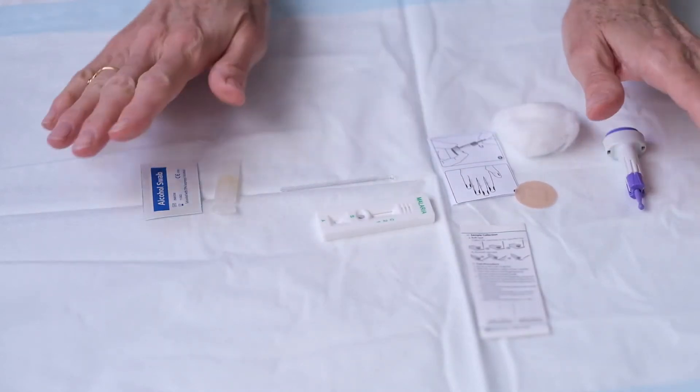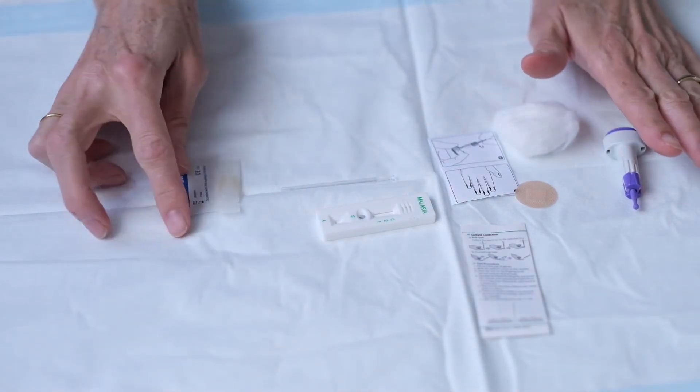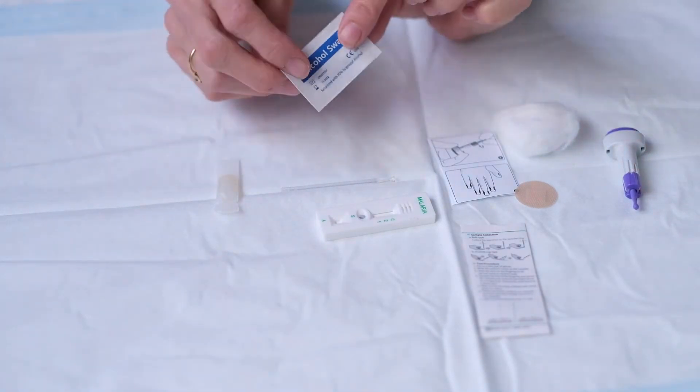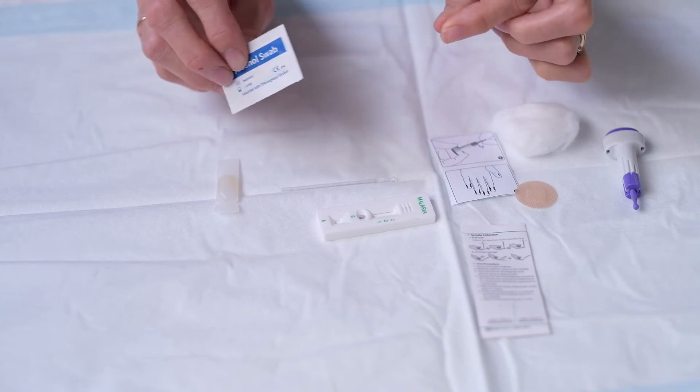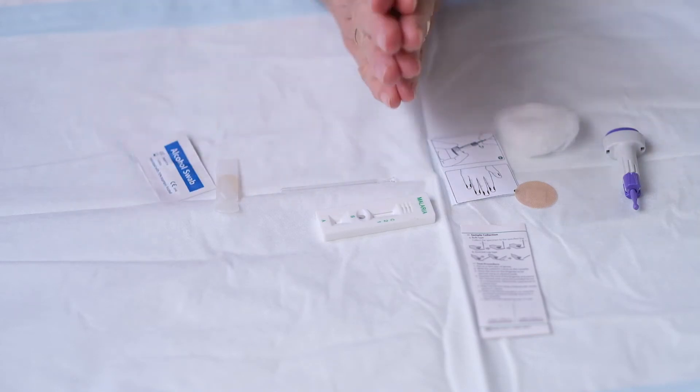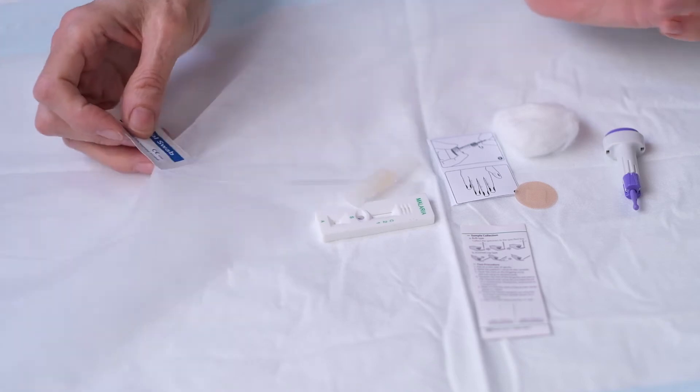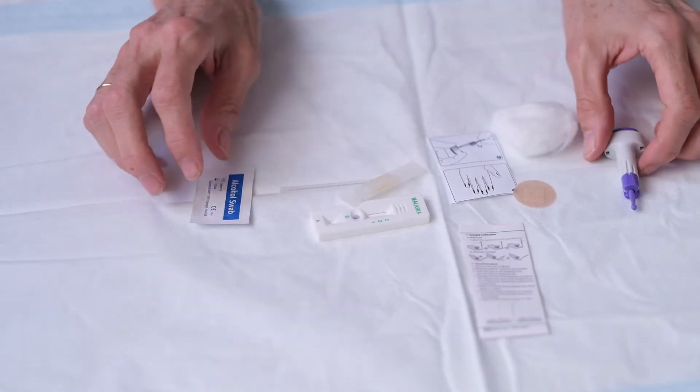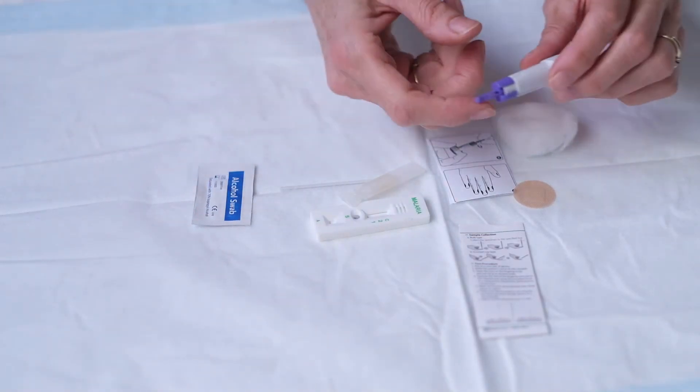So once you've got everything out, if your hand is dirty then you use the alcohol swab. If your hand is reasonably clean and you've washed your hands with soap and water beforehand, this is not perfect because it really makes the stab sting.